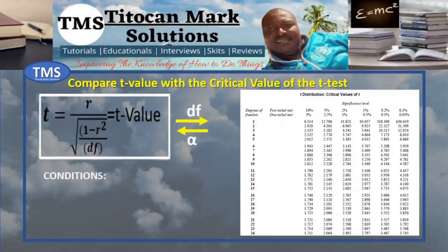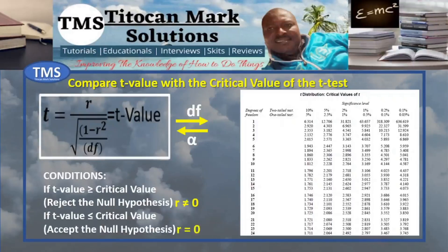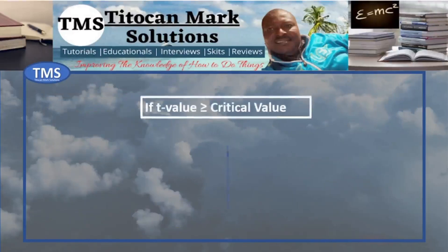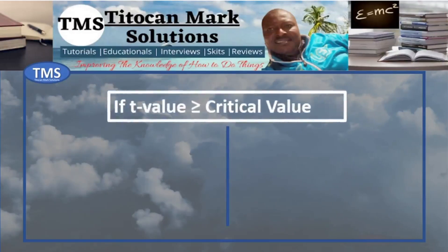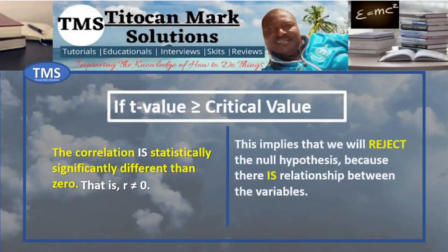There are two conditions that can help you make this decision. If the t-value is greater than the critical value, then reject the null hypothesis because r is not equal to 0. In simple interpretation, this means the correlation is statistically significantly different from 0, which implies we reject the null hypothesis and accept the alternate hypothesis because there is a relationship between the variables.